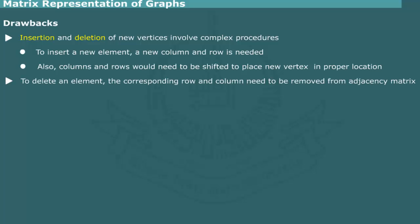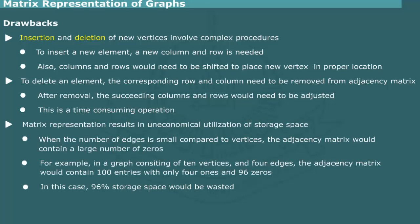In order to delete a vertex, we remove the corresponding row and column from the adjacency matrix. However, after removal of matrix elements, we would need to shift the succeeding rows and columns to update the adjacency matrix. This is a time-consuming operation, particularly if column or row to be deleted happens to be towards the end.